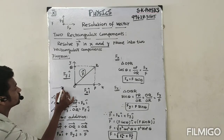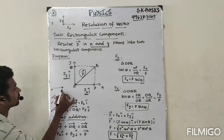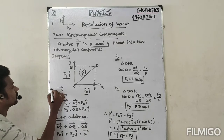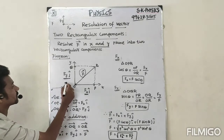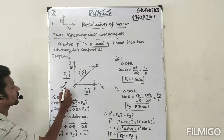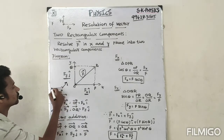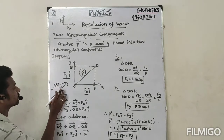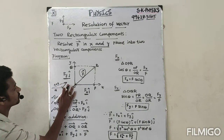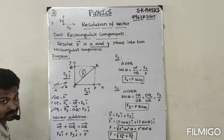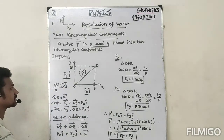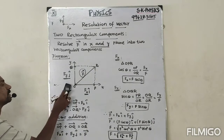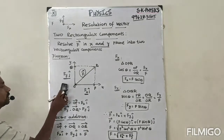For vector addition, consider OA vector and OB vector. We want to add A and B. This vector is A, this is B, and A plus B is the resultant — that is vector addition. The same idea we are going to follow here.